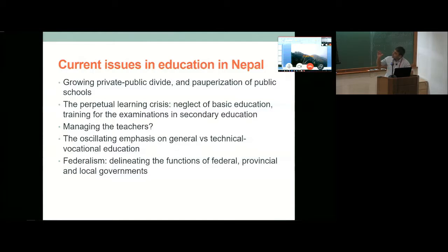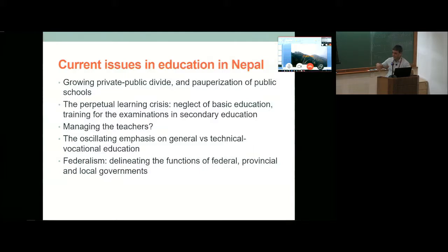On current issues: there is a growing public-private divide, with increasing elements of the private sector being reflected within public schools — for example, public schools offering an English medium of instruction alongside Nepali medium. There is also a pauperization of public schools, not in the sense that they are becoming poorer, but that they are becoming places for the poor to study, as evidence from living standards surveys shows. The perpetual learning crisis mainly stems from neglect of basic education and training for examination in secondary grades.